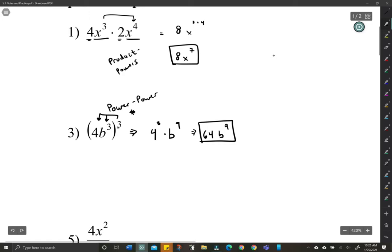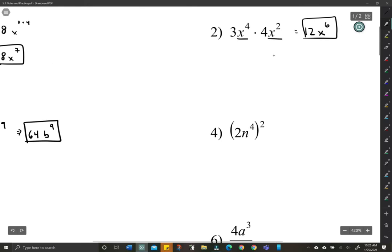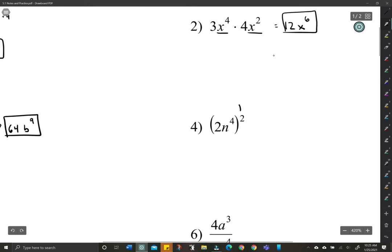Power to a power. Let's take a look at another example, 4. So same idea. Make sure we distribute to that 2. So it's going to be 2 squared n to the 4 times 2, which is 8, or just 4n to the 8th. Pretty easy stuff, hopefully, for that one there.